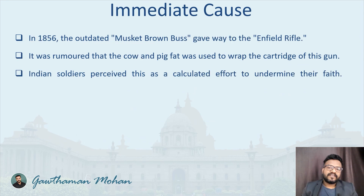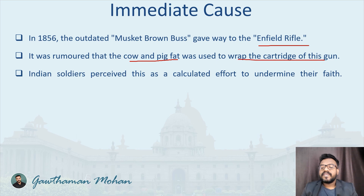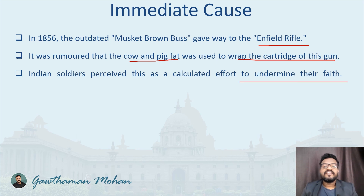Now, what was the immediate cause? For any revolution or rebellion, there is a trigger that is very important. The immediate cause was the use of the Enfield rifle, which was introduced in the Indian army. There was a rumor that cow and pig fat was used to wrap the cartridge of the gun, which was against the religious sentiments of both Muslims and Hindus. The Indian soldiers perceived this as a calculated effort to undermine their faith, and they started revolting against the Britishers. That was the immediate cause of the 1857 revolt.